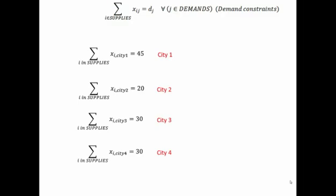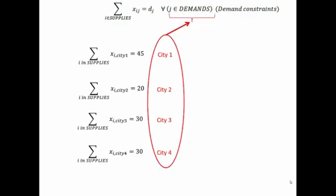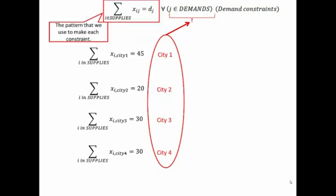If we were to write all these constraints out one on top of each other, we see that they all look very similar with the exception that each one of our cities appears in one of the constraints. So we can say we have one of these constraints for each one of our demand nodes. The pattern these constraints follow is: sum over all of the different supplies of xij, and that has to equal the demand at point j. These constraints replace j first with city one, then city two, then city three, then city four to make all four constraints.